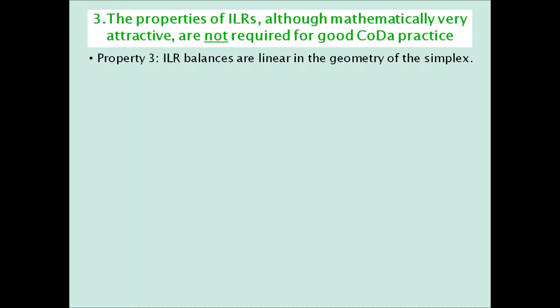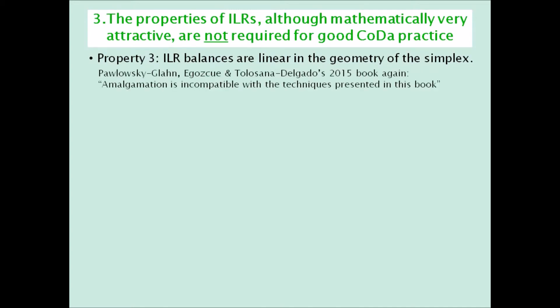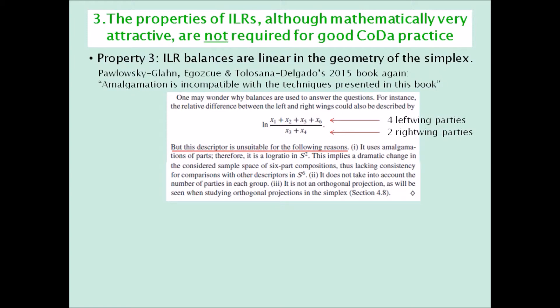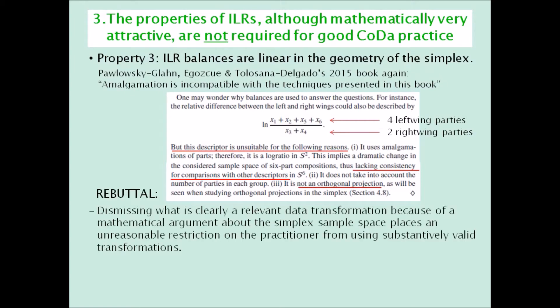Another property of ILR balances that proponents use as a justification is that they are linear in the geometry of the simplex, whereas amalgamation balances are not. Pawlowsky-Glahn and co-authors say in their book that 'amalgamation is incompatible with the techniques presented in this book,' and after the left-wing/right-wing voting example, they say that amalgamations are lacking consistency for comparison with other descriptors in the sample space and are not orthogonal projections. This dismissal of a relevant transformation because of a mathematical argument about the simplex sample space places an unreasonable restriction on the practitioner from using substantively valid transformations.